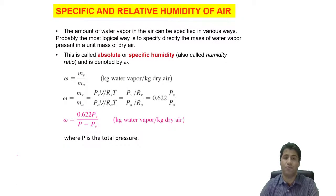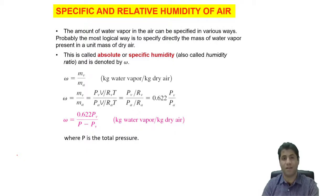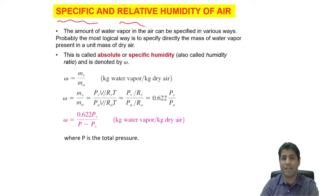We have learned how to calculate enthalpy for water vapor and dry air. Now, to calculate the enthalpy of atmospheric air, we need to know how much of the air is water vapor and how much is dry air. We need to find the relationship between the amount of water vapor and dry air to do this calculation. We can define specific and relative humidity of air.